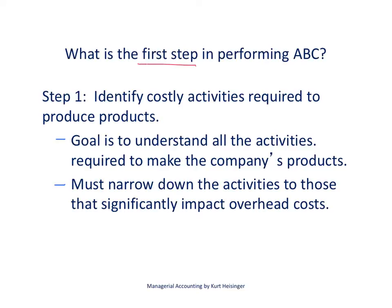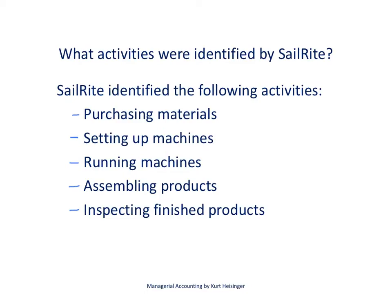The first step in performing activity-based costing is to identify the costly activities in our production process. The goal is to understand the activities required to make our products and then narrow down those activities to those that significantly impact overhead costs. Using Sailrite as our example, we produce two different models of sailboats: a basic model — no frills, relatively low cost — and a deluxe model, which has all the features and is relatively high cost.